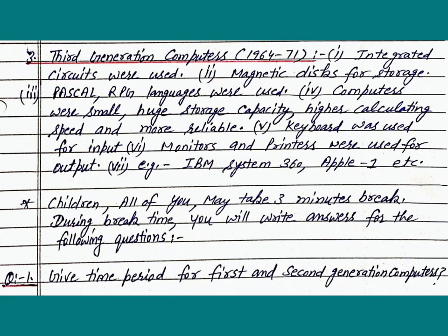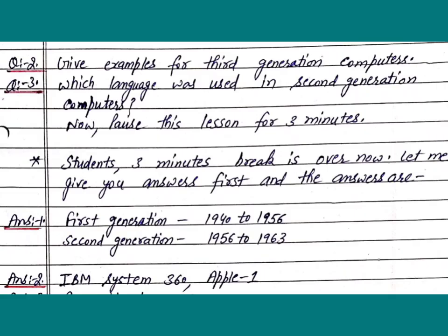Children, all of you may take a 3-minute break. During break time, you will write answers for the following questions. Question 1: Give the time period for first and second generation computers. Question 2: Give examples for third generation computers. Question 3: Which language was used in second generation computers? Now pause this lesson for 3 minutes.